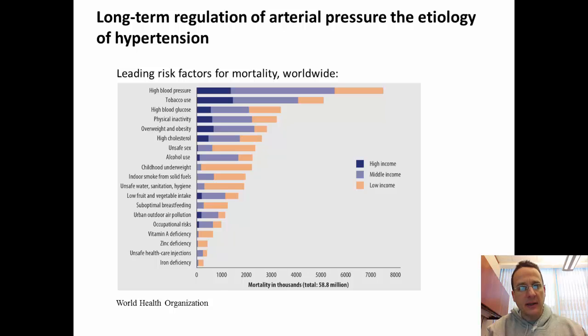We're interested in understanding how arterial pressure is regulated in health and in disease. One of the reasons is because hypertension, that's when blood pressure gets too high, is one of the leading risk factors for mortality. According to the World Health Organization, high blood pressure hypertension is the number one leading risk factor.